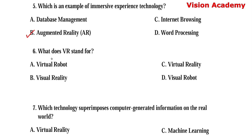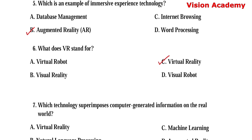Question number 6. What does VR stand for? Option A: Virtual robot. Option B: Visual reality. Option C: Virtual reality. Option D: Visual robot. Here, option C, virtual reality, is the right answer.